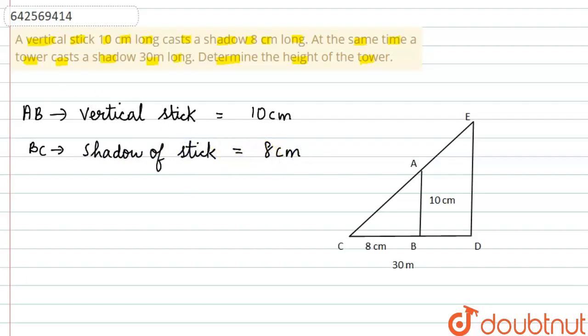Then we have taken ED as the tower whose height has to be found. So let ED be the tower and here CD is the shadow of the tower. CD shadow of tower which is equal to 30 meters.